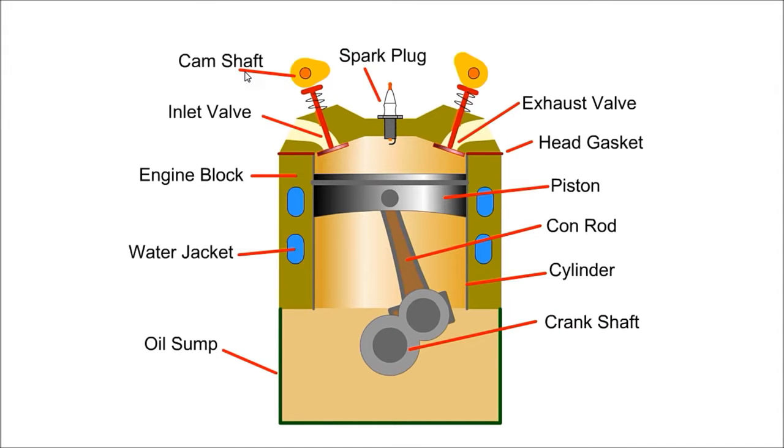We take a look at the engine components. At the top we have the camshaft which controls the inlet valve, allowing fuel and air into the cylinder. The block houses the main components of the engine and is cooled by the water jacket. Oil is stored in the sump and is used to lubricate the engine.